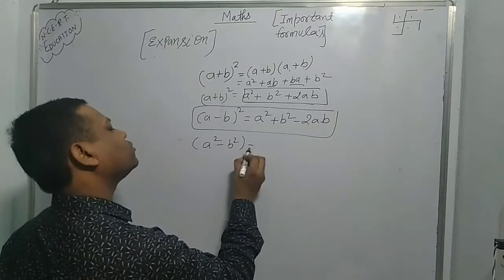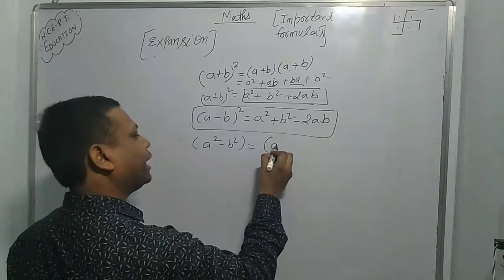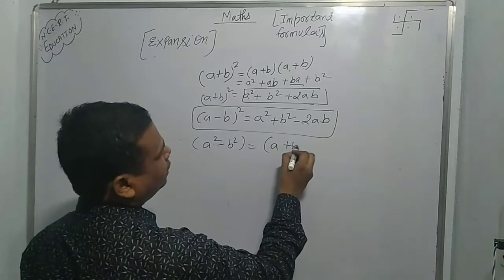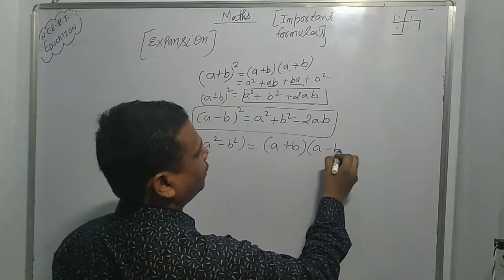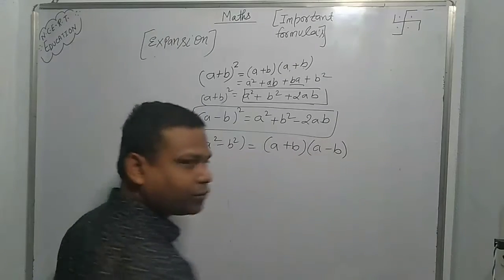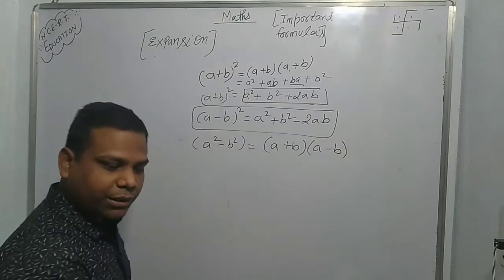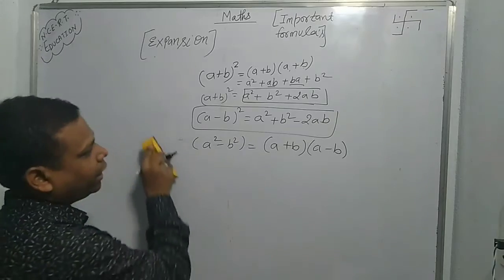Next: a squared minus b squared. This factors as (a plus b)(a minus b).